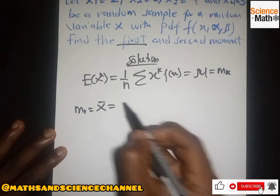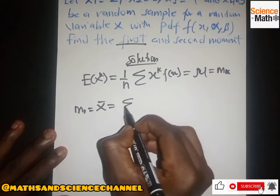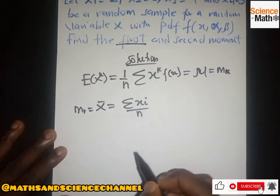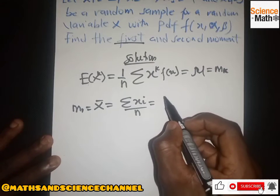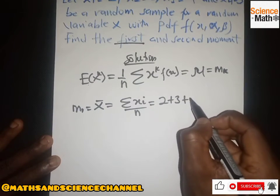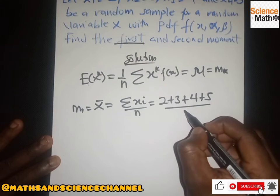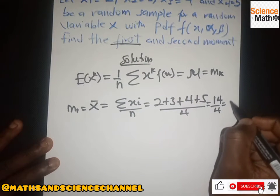This is equal to the summation of all the X values divided by the number of X values that you are being given. So we have 2 plus 3 plus 4 plus 5 divided by 4, and this is going to give us 14 over 4, which is equal to 7 over 2.